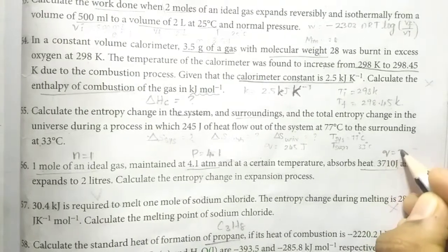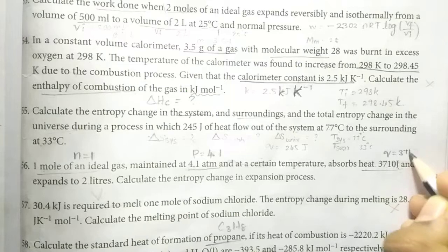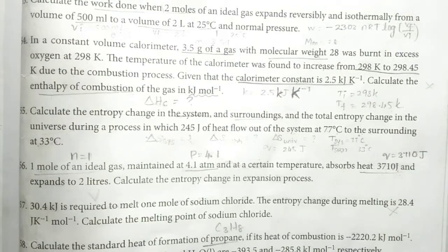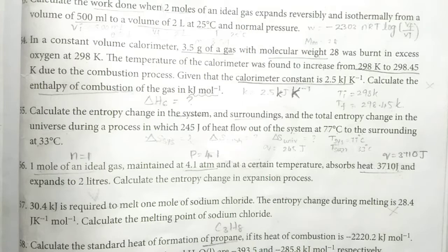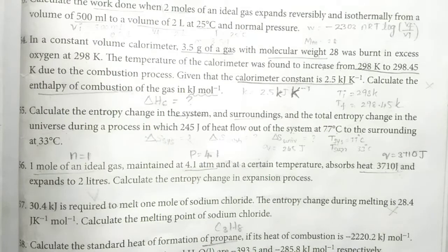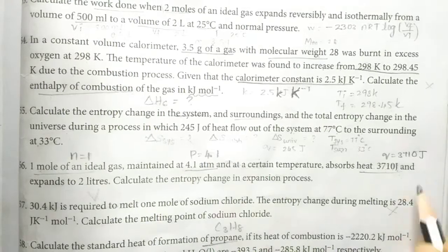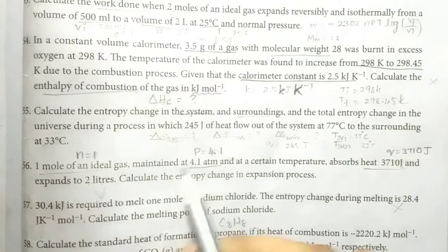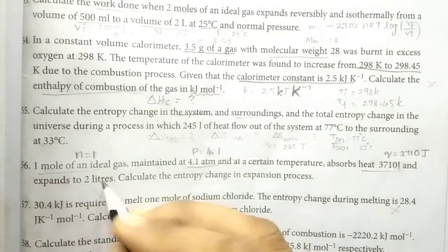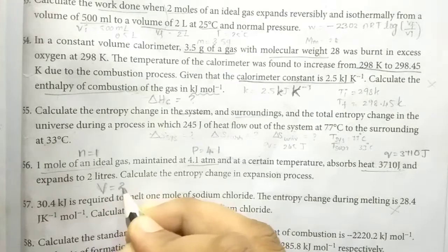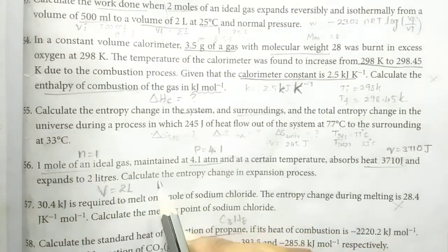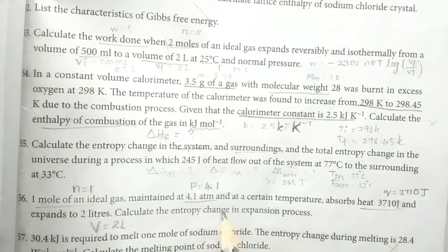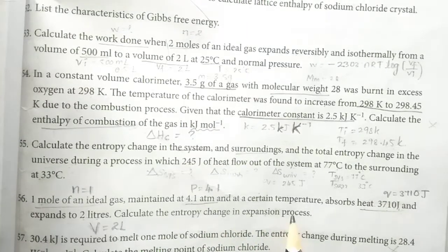Q is equal to 3,710 J. The gas expands to 2 L, so volume V is equal to 2 L. We are asked to calculate the entropy change in the expansion process.